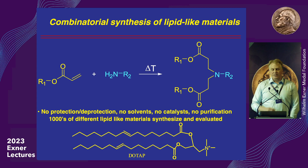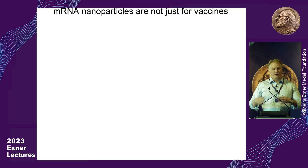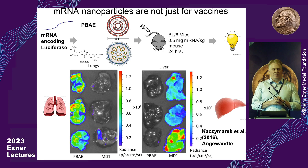I see this as the tip of the iceberg. I believe these nanoparticles are going to be useful to deliver nucleic acids for many types of diseases and to many different tissues — they're not just for vaccines. Here's an example where we took two different nanoparticles and by changing the chemistry — but with the same messenger RNA encoding luciferase, the protein that allows fireflies to give off light — we can measure how much light comes out of tissue to see if nanoparticles are working.